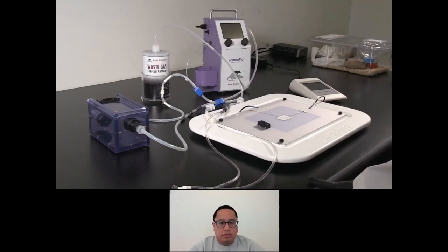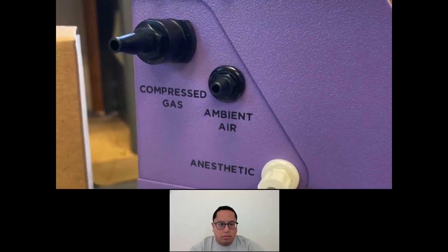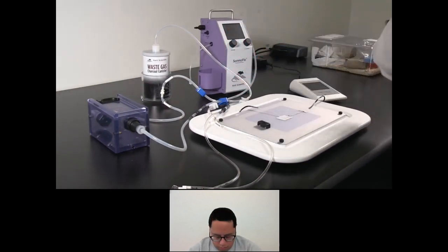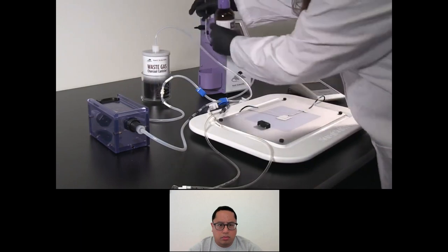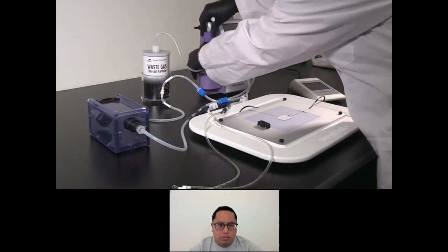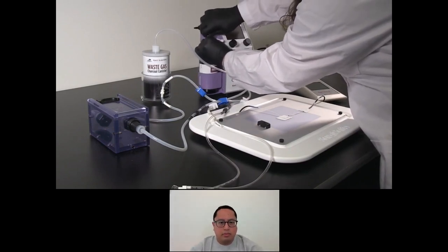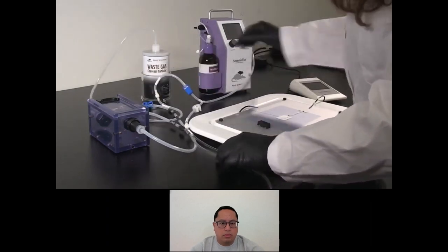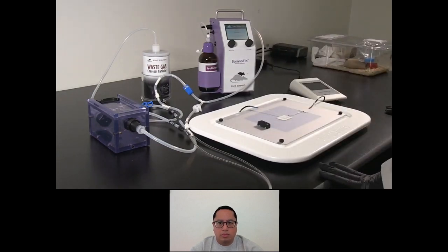Attach the charcoal canister using the charcoal canister tubing. The SomnoFlow can deliver anesthesia without the need for compressed gas. If you're using ambient air from the system's internal pump, leave the air inlet open. If you wish to use a compressed gas source, use the compressed gas assembly to connect a pressure regulated gas source to the SomnoFlow's compressed gas port. The inlet pressure should not exceed 15 psi. Connect the included bottle top adapter to a bottle of anesthetic, connect the delivery tubing to the bottle top adapter, and place the anesthetic bottle into the holder. Turn on the SomnoFlow to begin the automatic priming sequence; the system will draw anesthetic directly from the bottle and prepare the system for delivery.